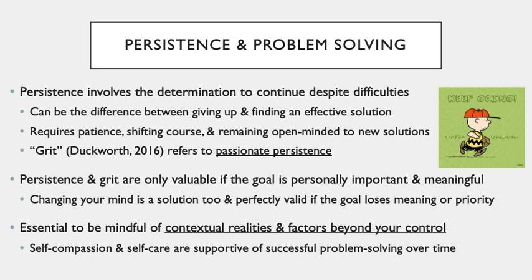The research consistently demonstrates that one of the primary factors highly correlated with successful problem solving is persistence — the determination to continue despite difficulties. It is very often the difference between giving up and finding an effective solution. Persistence requires significant patience, the ability to shift course, and remaining open-minded to new solutions. Many people refer to this type of persistence as grit, a term coined by Angela Duckworth in her book of that title, referring to passionate persistence.